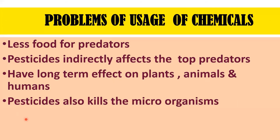Now we will learn about the problems of chemical use. As early as the 1960s, biologists highlighted the impact of pesticides on the food chain and food web. A reduction in insects means less food for primary consumers such as small birds or reptiles, and consequently less food for top predators such as larger birds. Pesticides indirectly affect top predators, which accumulate higher concentrations of toxic chemicals. Chemical fertilizers have a long-term effect on plants, animals, soil and humans. They not only kill pests and insects but also kill microorganisms in the soil, which can ultimately make the soil useless, where nothing can grow.